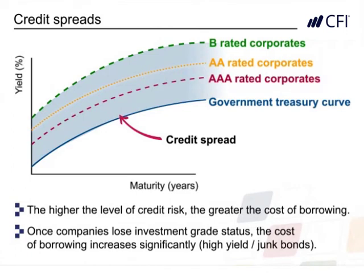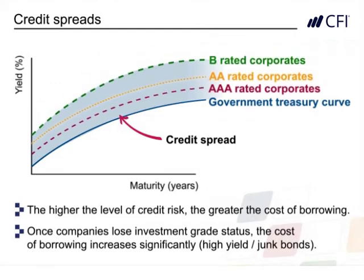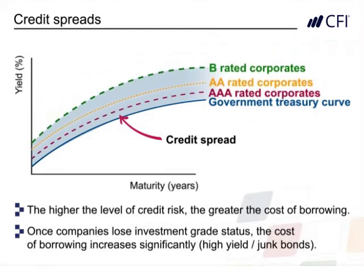As economic conditions improve, credit spreads narrow because of an improvement in the credit quality of the companies. As credit spreads narrow, bond yields fall, which means the prices of these bonds are increasing.